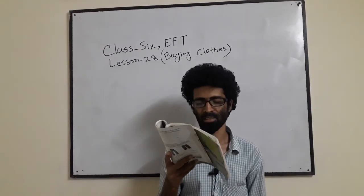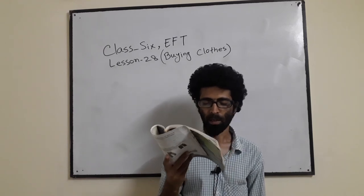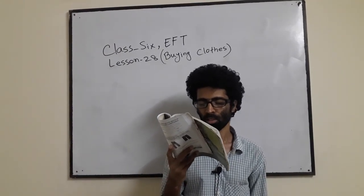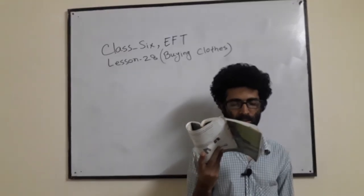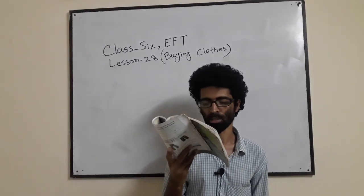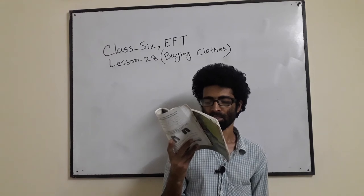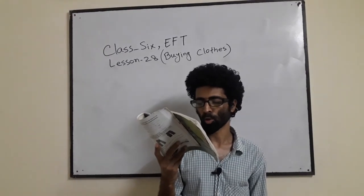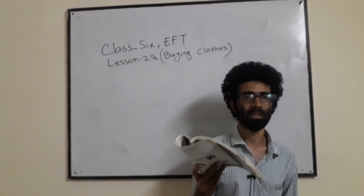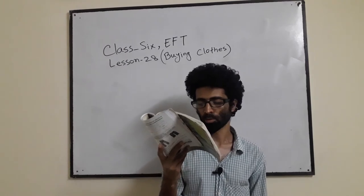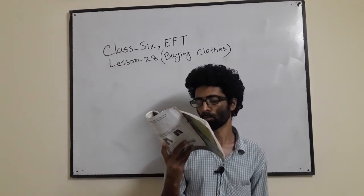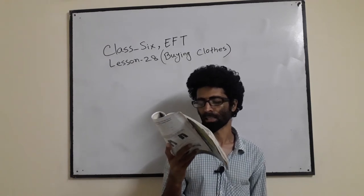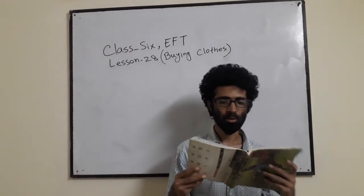Exercise C — complete the sentences using words from the conversation. One: Imran doesn't like polo shirts with a chain. Two: A small size shirt fits Imran perfectly — answer: small. Three: The shirt that Imran chose finally is sky blue in color — answer: sky blue. Four: He wants to try the polo shirt on before buying it — answer: try. Five: The polo shirt that Imran likes is on sale this week — answer: sale.